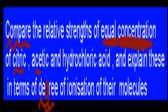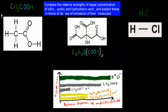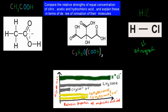We have to compare the strengths of equal concentrations of citric acid, acetic acid, and hydrochloric acid, explaining that in terms of the degree of ionization. Hydrochloric acid is the strongest of those three. Acetic acid is the weakest. Citric acid is in between — still weak, but not the weakest.